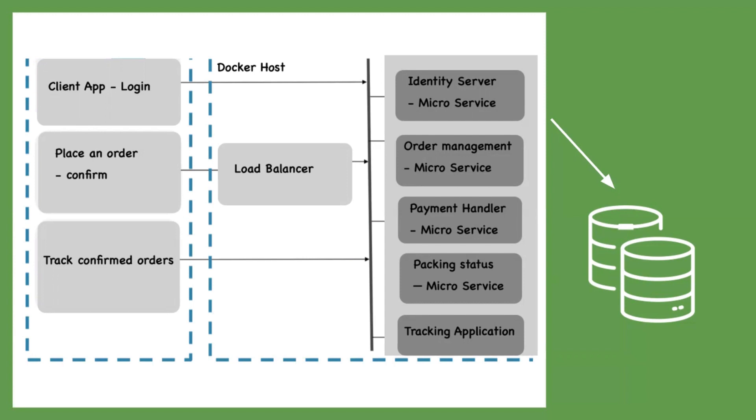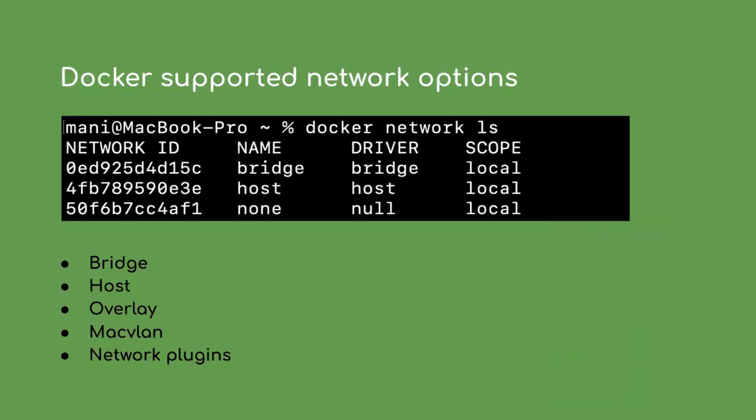What are the Docker built-in network options? Once you install Docker on your PC, it comes up with three network options: bridge network, host, and none. The scope of a bridge network is within the Docker host itself, which means containers deployed in that Docker host can only communicate with each other; these containers cannot connect to other containers running on a different host.